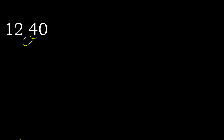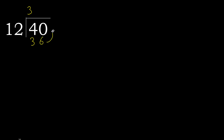40 divided by 12. 4 is less, therefore next. 40 is not less, therefore with 40 and 12, multiply by which number is nearest to 40 but not greater. 12 multiplied by 4 is 48 — 48 is greater. So multiply by 3: 36. 36 is not greater.